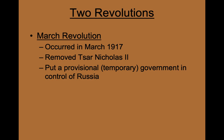Once Tsar Nicholas was removed, a temporary or provisional government made up of members of the Russian Duma, or legislative body, was put in control of Russia and given the authority to make all decisions related to the country and its involvement in World War I.